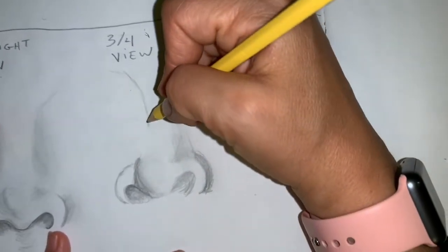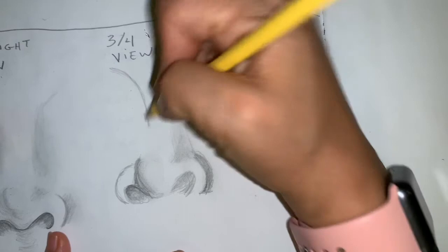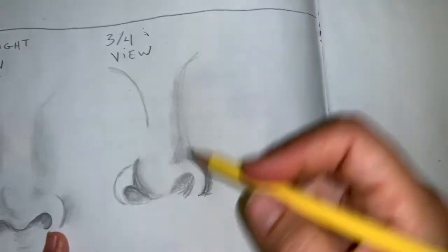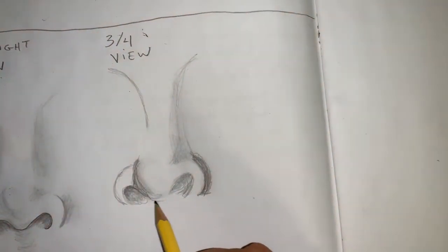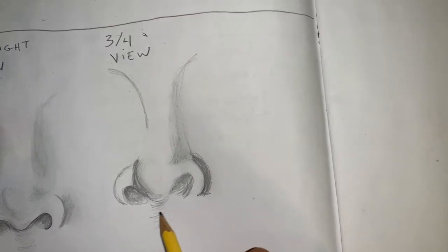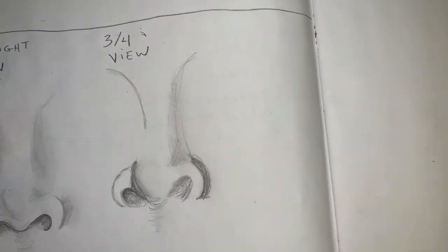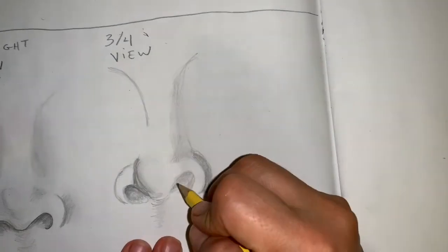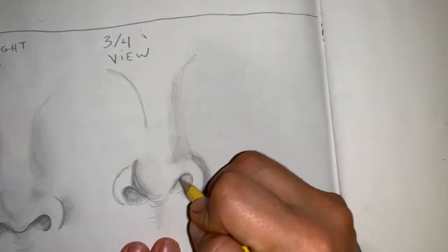Everybody's nose has a different shape, so the best way to practice noses is to look at a picture and practice that way. Again, we have the U-shape here, leading down to the mouth. Darken in my shadows.